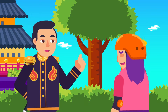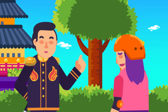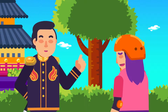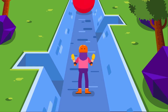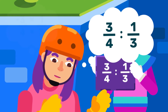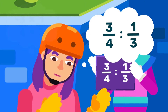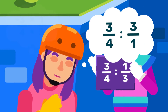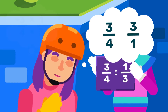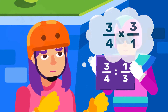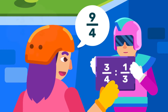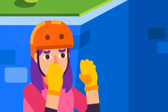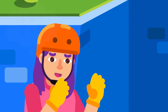Division. You cannot directly divide rational numbers. What you need to do first is get the inverse or reciprocal of the second number by flipping it and rewriting the division sign as multiplication. Then solve by multiplying both numerators and both denominators.